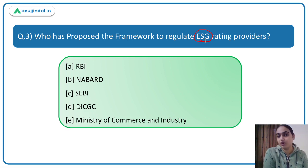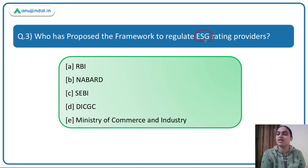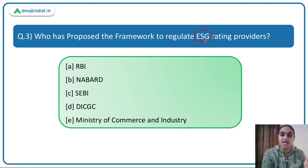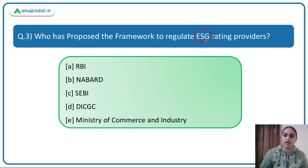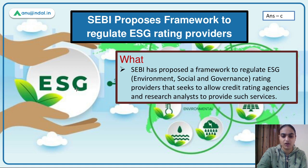A company with a good ESG rating is preferred more by investors. However, as of now, ESG rating providers are not regulated — there is no regulatory oversight. A regulatory body has proposed a framework to regulate these ESG rating providers. That body is SEBI, the markets regulator. The answer is Option C.